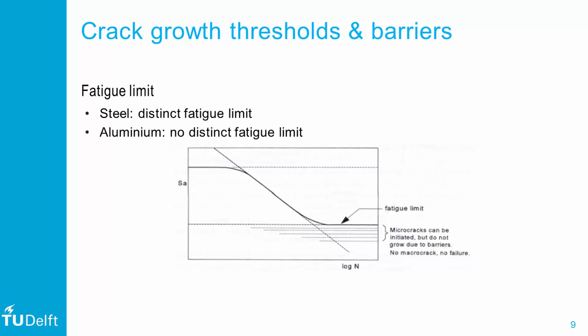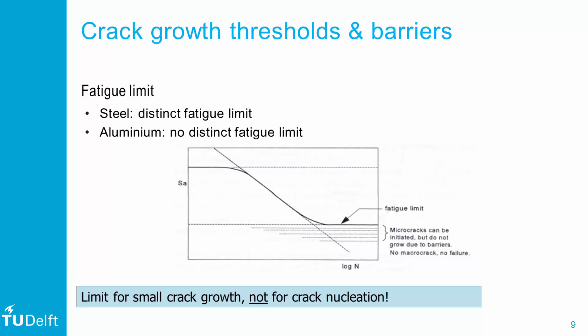Because these microstructural barriers depend on the material grain structure, the fatigue limit also depends on the material. For steel, very distinct limits are observed, while for aluminium the limit may still slowly decrease after the lower knee point. At extremely high numbers of fatigue cycles, failure may be observed at stress amplitudes lower than the conventional fatigue limit.